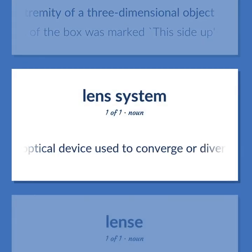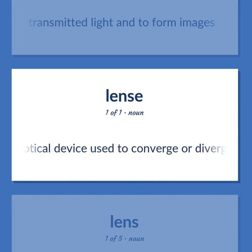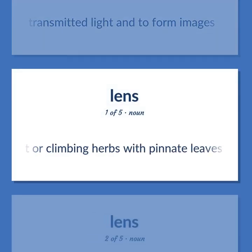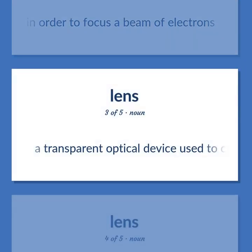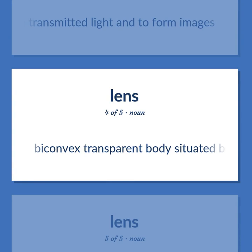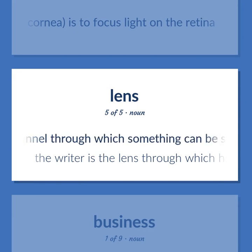Lens: a transparent optical device used to converge or diverge transmitted light and to form images. Genus of small erect or climbing herbs with pinnate leaves and small inconspicuous white flowers and small flattened pods — lentils. Electronic equipment that uses a magnetic or electric field in order to focus a beam of electrons. A transparent optical device used to converge or diverge transmitted light and to form images. The convex transparent body situated behind the iris in the eye — its role, along with the cornea, is to focus light on the retina. Metaphor: a channel through which something can be seen or understood. The writer is the lens through which history can be seen.